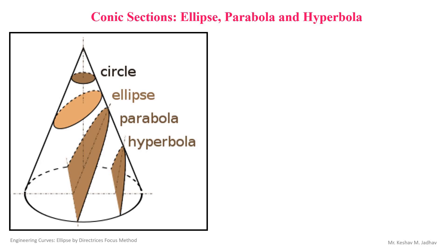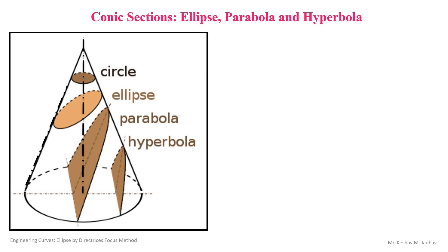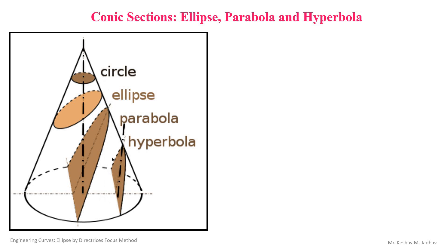First we will see different types of conic sections. This is the right circular cone and this is the axis of cone. If you cut this cone in different ways, we get different shapes. If the cutting plane is perpendicular to the axis, we get a circular shape. If cut at a certain inclination to the axis, we get an elliptic shape. If the cutting plane is parallel to the generator and passes through the base, we get a parabolic shape. If the cutting plane is parallel to the axis, we get a hyperbolic shape.